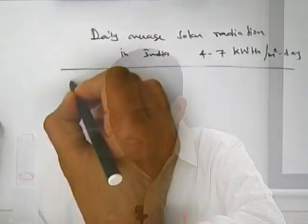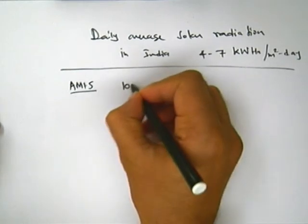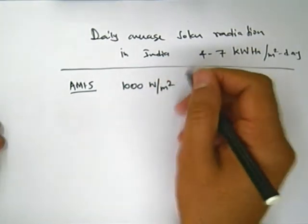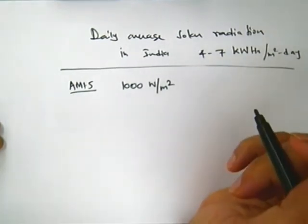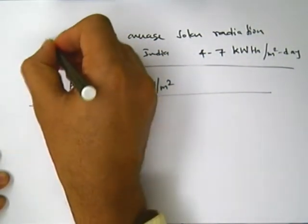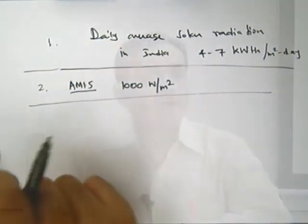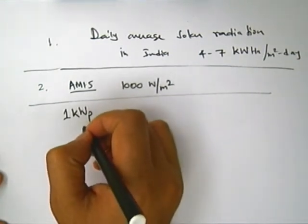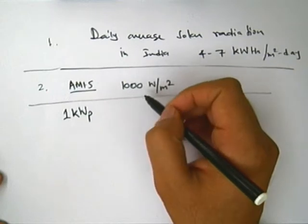Whenever we characterize our solar PV cells and modules, the characterization standard is AM 1.5 spectrum, which corresponds to 1000 watt per meter square. So if I need to find out how much energy will be generated on a daily basis if I install 1 kilowatt of module — suppose I am installing 1 kilowatt peak, where 'peak' indicates the peak power corresponding to 1000 watt per meter square.